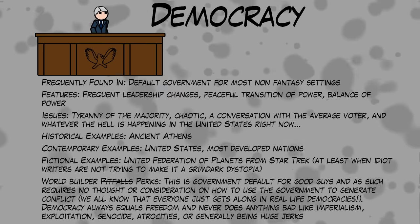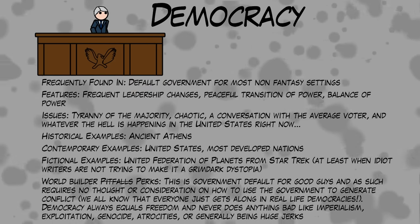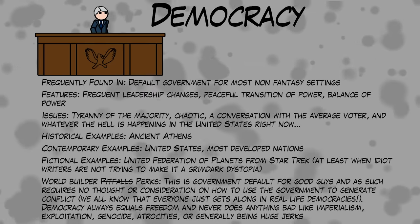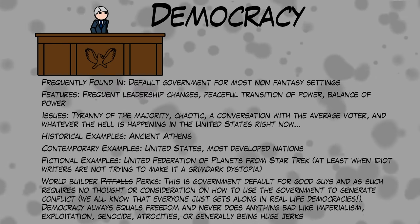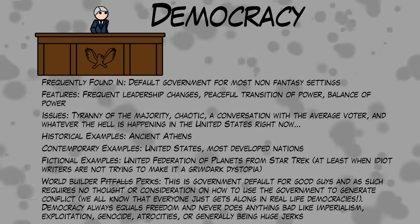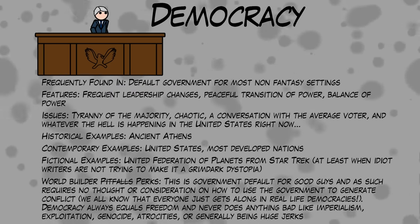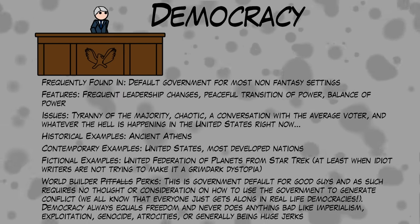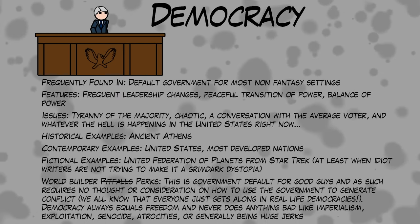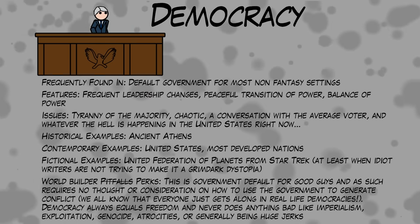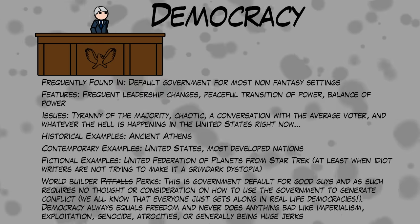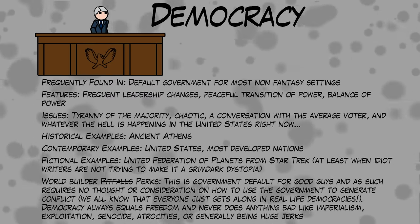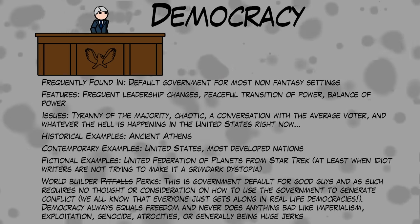Overall, democratic systems have the key advantage of a peaceful transition of power — usually. Elections can be expensive but wars of succession are even more so. Cycling out leaders can also help these systems adapt to changing conditions and have systems in place to get rid of ineffective leaders. However, complex systems that have a lot of moving parts also tend to have a lot of ways for things to break. Democratic systems have a bad habit of being gamed to the breaking point by bad actors, corporate interests, foreign meddling, and various extremists, on top of the constant threat of the tyranny of the majority. This means that democracies can slide into oligarchies, kleptocracies, or even completely collapse into far worse things.